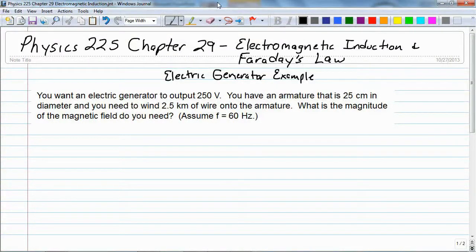So let's build an electric motor, and we have a problem here. We want an electric generator to output 250 volts, and it has an armature that is 25 centimeters in diameter, and you have 2.5 kilometers of wire to put on the armature, and we want to know what size or strength of a magnetic field that we're going to need. And we're going to assume that the frequency is 60 hertz, so it's standard U.S. frequency.